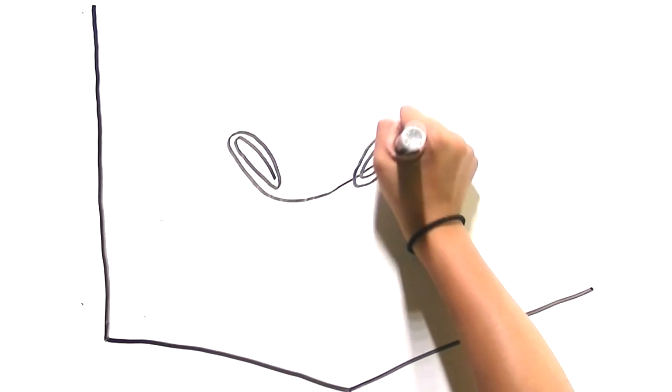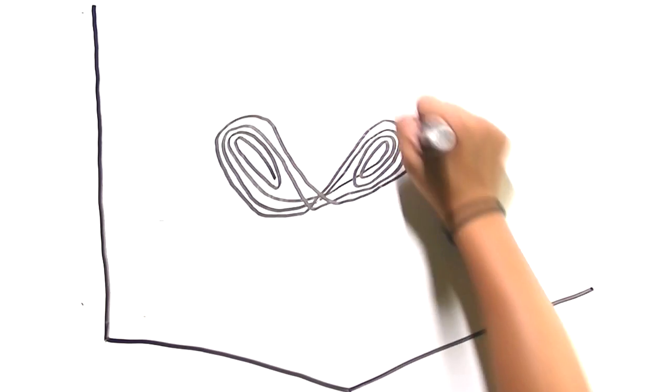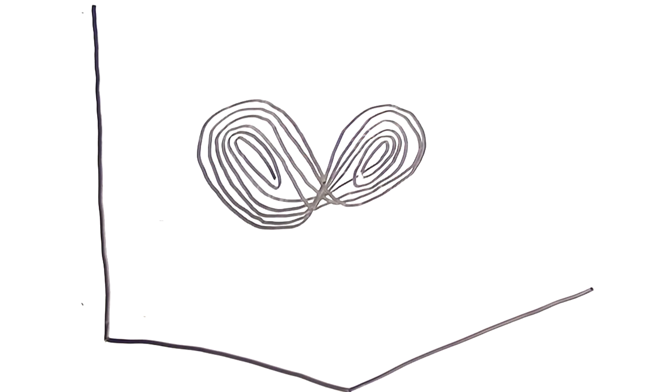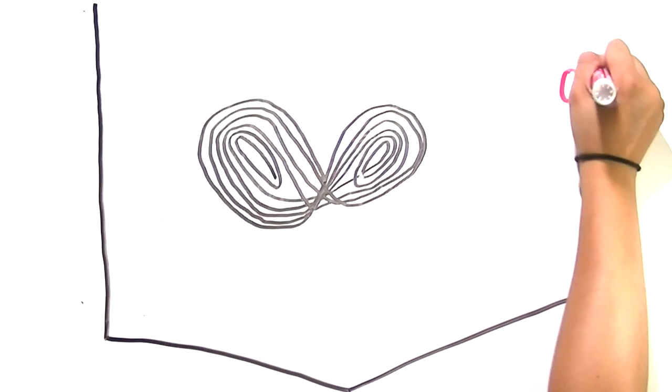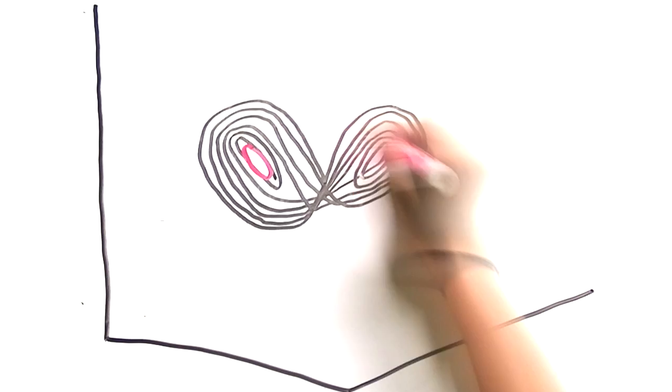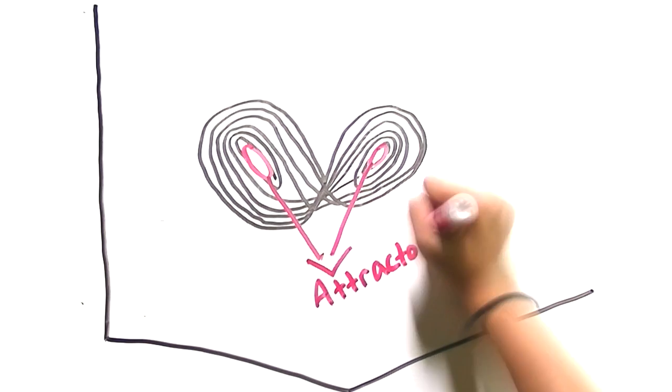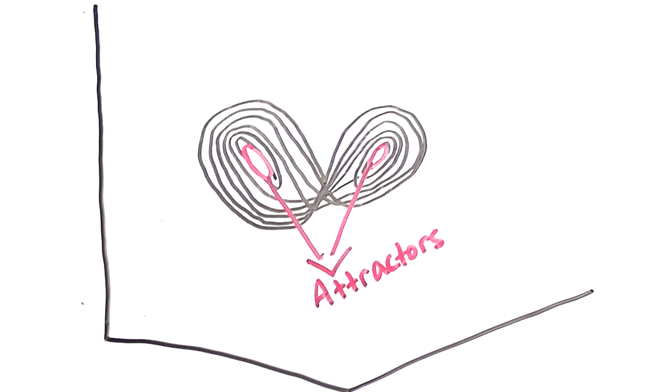If we graph a set of solutions to the Lorenz equations, we come up with a graph that looks something like a butterfly or owl's eyes. These two holes in the middle are called attractors, which are like asymptotes, except they can be any shape.